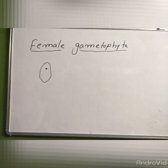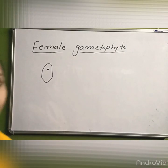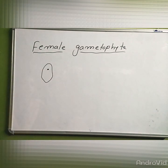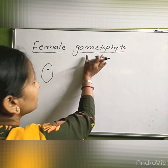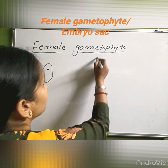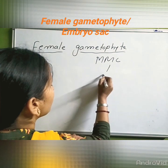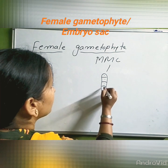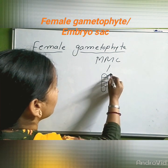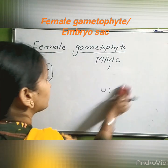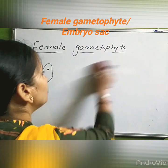Hello students, let's start with the female gametophyte. In the previous class we discussed the formation of the female gametophyte. We got that from the mega spore mother cell, four mega spores form. Among these, three degenerate and one remains as the functional mega spore. Today we will discuss this part.